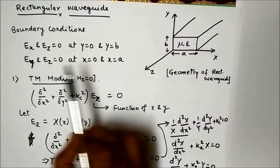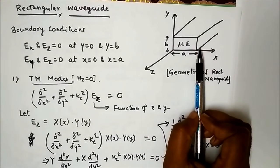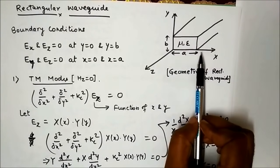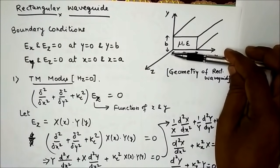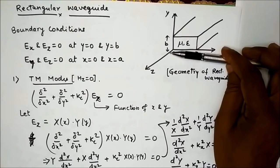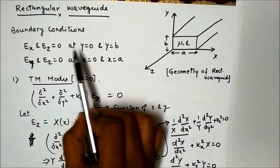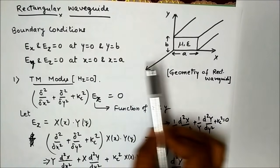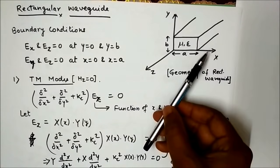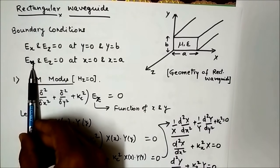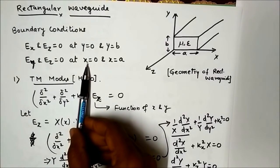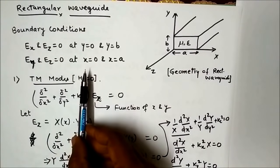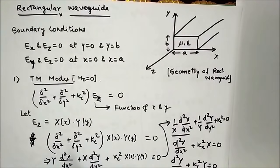Apart from Ez, Ex is also tangential on the top and bottom walls. So Ex equals zero at y=b (top wall) and y=0 (bottom wall). Similarly, Ey is tangential at the side walls, so Ey equals zero at x=0 and x=a. These boundary conditions will be very useful when solving different modes in rectangular waveguide.